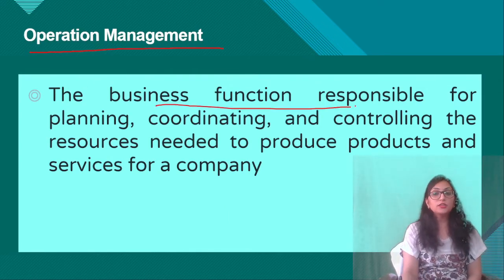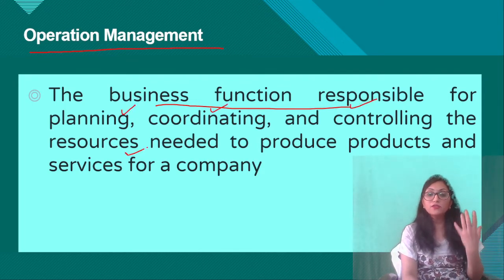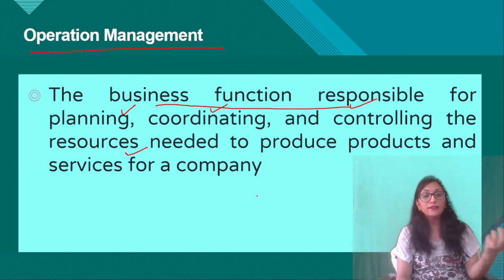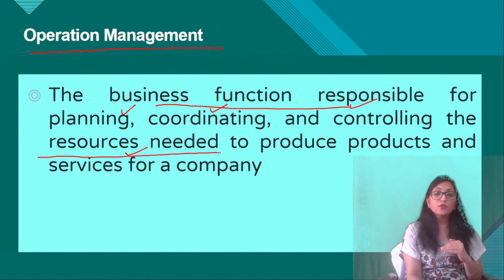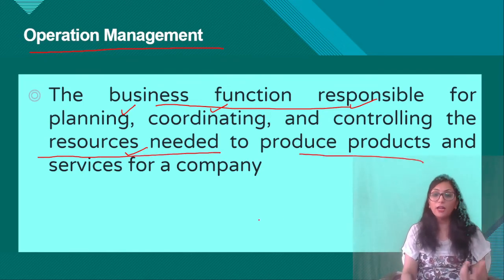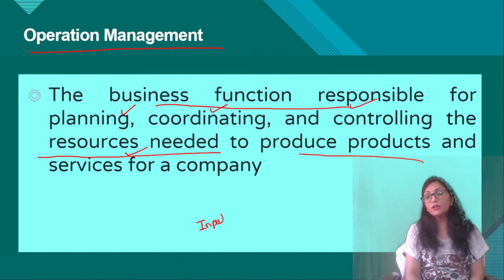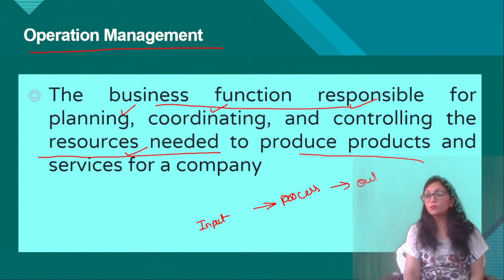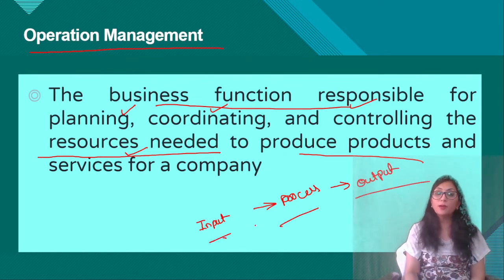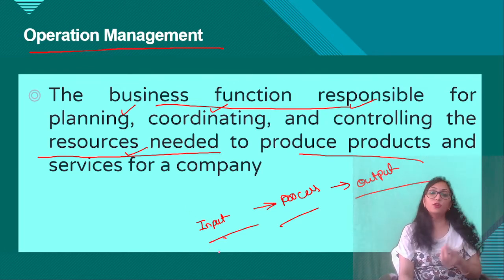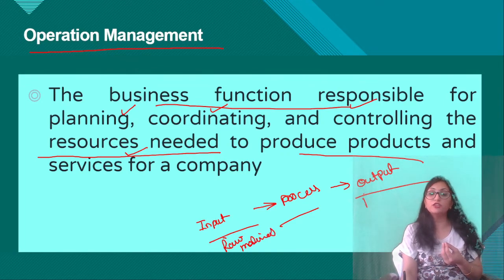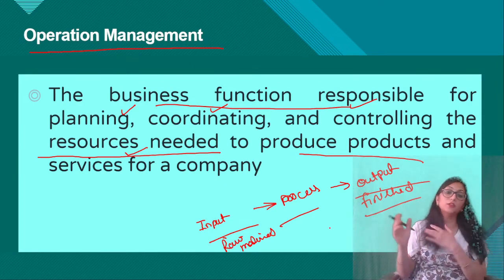What is operations management? It is a business function that is responsible for planning, coordinating, and controlling all the resources that you need to make a product. You can see that the input — raw material — goes through a process and is converted into finished goods. All the processes that are required for this conversion come under operations management.